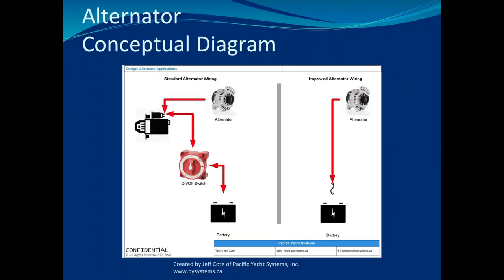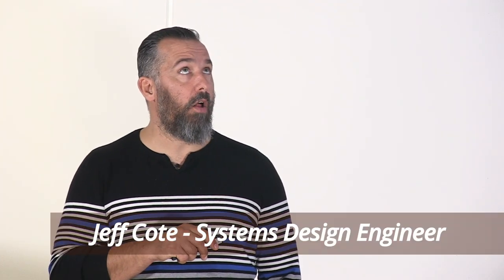Your alternator output is connected over a very tiny wire for three feet to the starter solenoid post. In turn, that starter solenoid post is connected to an on-off battery switch, and in turn that battery switch is connected to a battery. This could be an off one, all, both, two switch, doesn't matter.